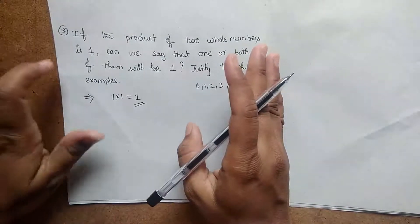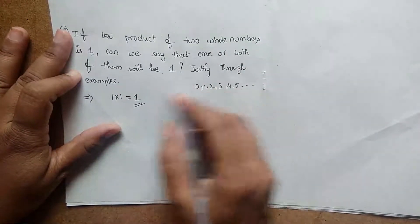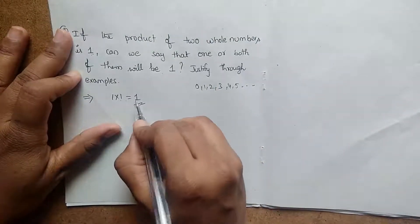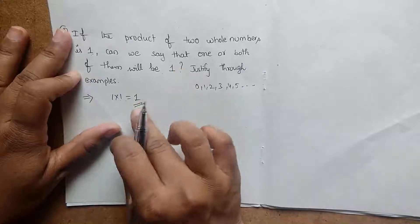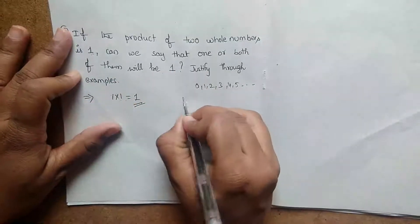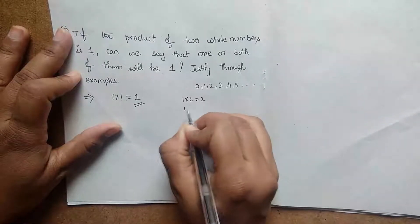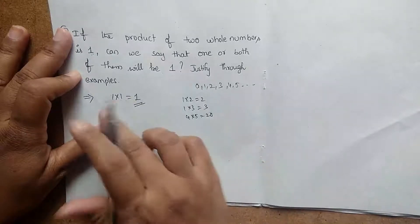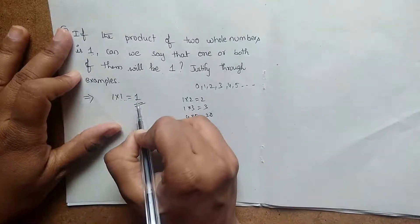Can we say that one or both of them will be 1? Yes, both of them will be 1, then we get 1. Justify through examples: take 1 into 2 equals 2, 1 into 3 equals 3, 4 into 5 equals 20. No, both will be 1, then we get 1.